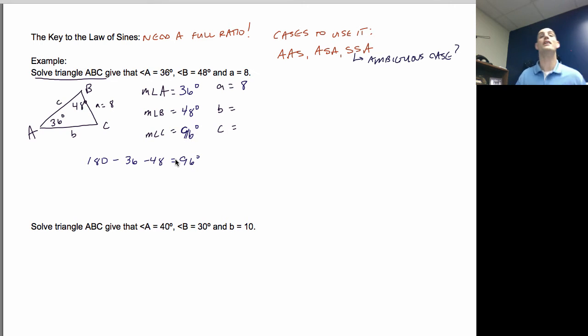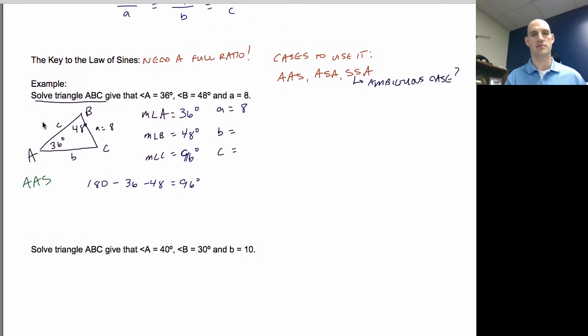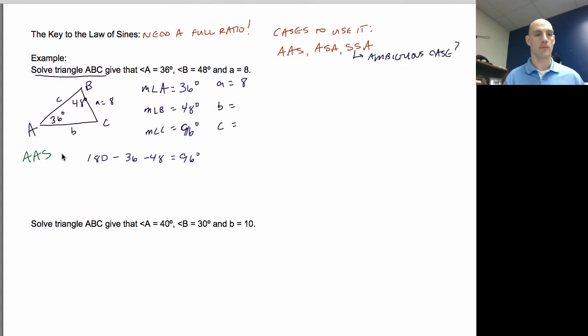So what am I going to use to solve for these other two pieces? I can't use Pythagorean theorem because it's not a right triangle. So I'm thinking maybe I'll use the law of sines. Well, do I have the case where I can use the law of sines? Let's check it out. I have angle and an angle and an unincluded side. So I don't have the one between the angles. So I really actually have angle, angle, side. Is that one of the cases where I can use it? Oh yeah, absolutely.